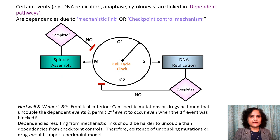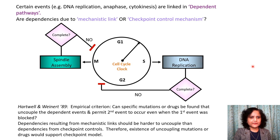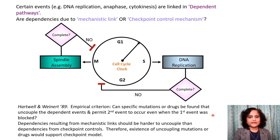Certain events are linked in dependent pathways — for example, DNA replication, anaphase, and cytokinesis happen in a particular order. To determine whether dependencies are due to a mechanistic link or a checkpoint control mechanism, Hartwell and Weinert suggested an empirical criterion: can we find specific mutations or drugs that would uncouple the dependent events and permit the second event to occur even when the first is incomplete or blocked? Dependencies from mechanistic links should be harder to uncouple; thus, uncoupling mutations or drugs would support the checkpoint model.